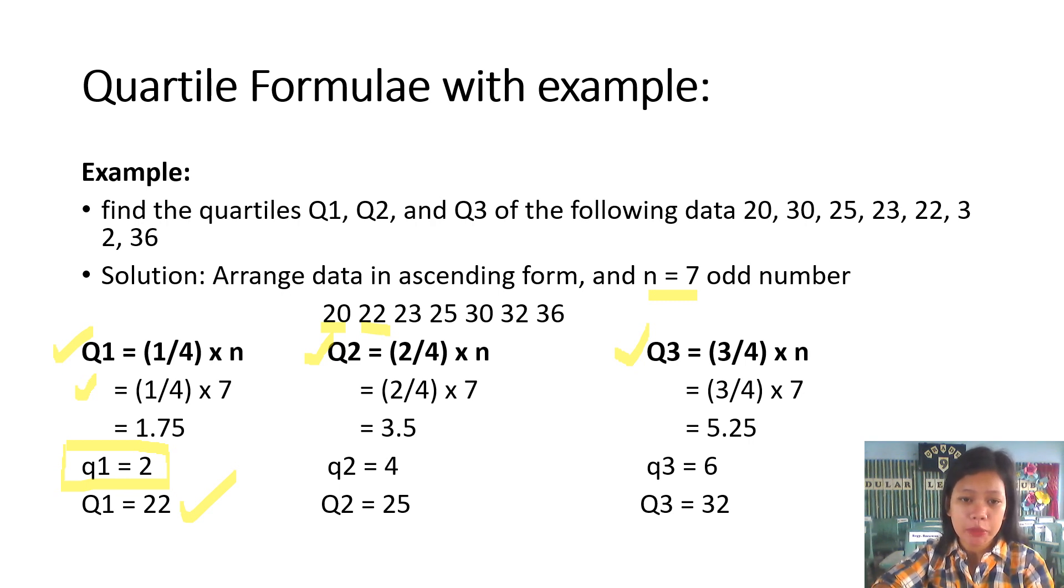Quartile 2, the formula is two-fourth times N. Two-fourth times N is equals to 3.5 or quartile 2 is equals to 4. From the first data, we have to count one to four. One is 20, 22 second, 23 is 3, 25 is 4. Under the fourth data is 25. 25 below or 20 to 25 datas are falls under the distribution of quartile 2.